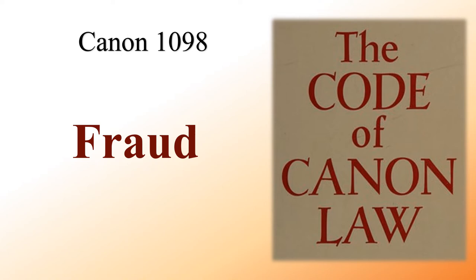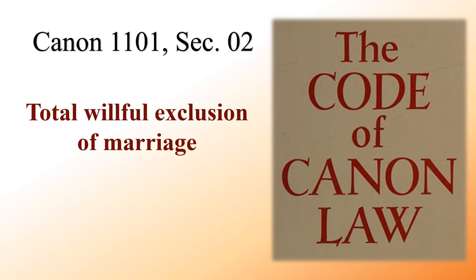Total willful exclusion of marriage: You or your spouse did not intend to contract marriage as the law of the Catholic Church understands marriage. Rather, the ceremony was observed solely as a means of obtaining something other than marriage itself — for example, to obtain legal status in the country or to legitimize a child.